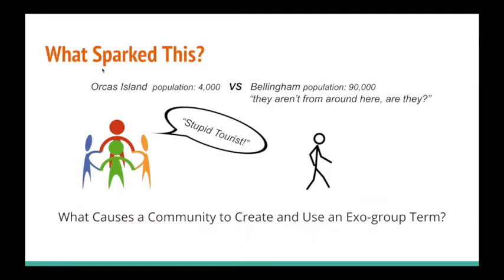As someone who grew up in a very small community before heading off to a much larger city for college, I found there are many differences in how a community reacts toward insiders and perceived outsiders. Something that really stood out to me is how I never really heard anybody make insults or comments about newcomers in the Bellingham area. In comparison, back on Orcas Island, we make those comments all the time about outsiders.